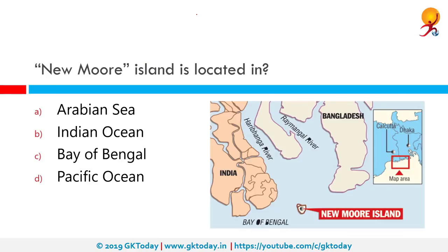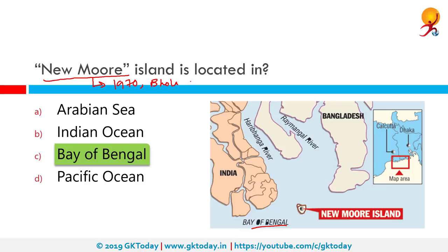New Moor Island is located in the Bay of Bengal. New Moor Island in India — also known as South Talpatti Island in Bangladesh — is an uninhabited island that emerged in the Bay of Bengal in the aftermath of Bhola's cyclone in 1970. Before the cyclone, we didn't know it existed. It was created by delta currents and located south of the Hariabhanga River. Now it has again disappeared due to rising sea levels.